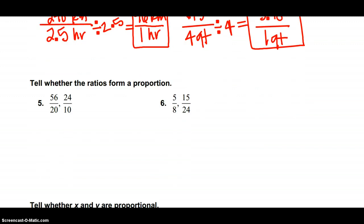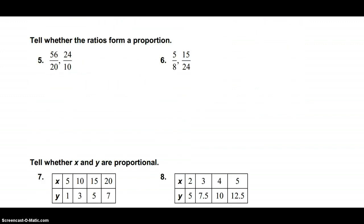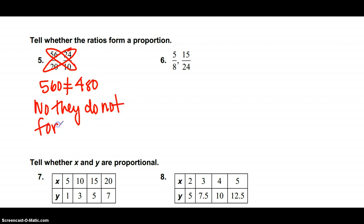5 and 6, tell whether the ratios form a proportion. Two different ways you can do this. You can simplify the two fractions and see if they're equal once you simplify them, or you can use cross products. On number 5, I'm going to do cross products because the numbers are so big. So 56 times 10 is 560, 20 times 24 is 480. Since these are not equal to each other, no, they do not form a proportion. Yes, you do need to write this full answer on your test. Number 6, these numbers are small enough to where I can simplify them. So if I divide the second fraction by 3, I get 5 8ths is equal to 5 8ths. Since these are equal to each other, yes, they do form a proportion.